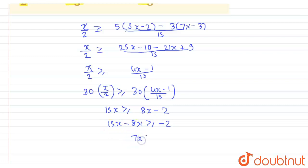So I can write 7x which is greater than or equal to minus 2. So the value of x is greater than or equal to minus 2 upon 7.